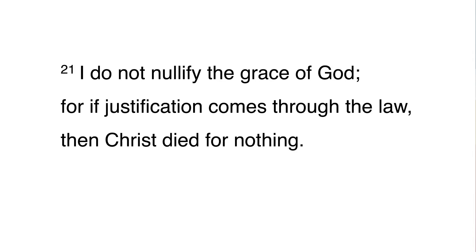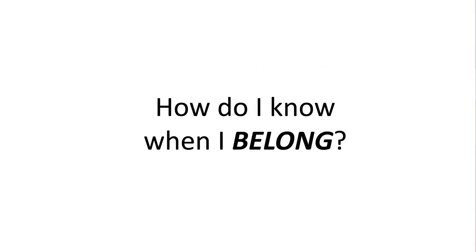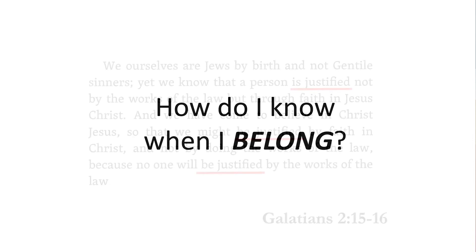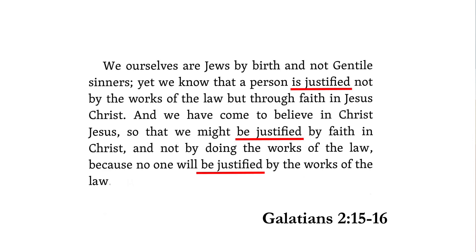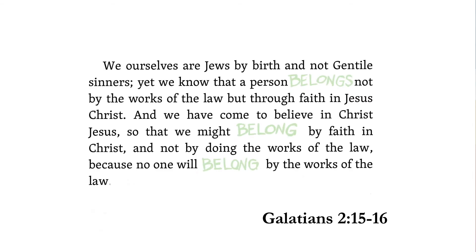This concludes the actual text study. I have one more thing I'd like to share. As I've gone through this, here's how I've put this into a 'what about now, why does it matter?' framework. If we read the passage again — 'we know that a person is justified' — what if we understood 'justified' as 'belonging'? 'We know that a person belongs to God, not by the works of the law, but through faith in Jesus Christ, and we have come to believe in Christ Jesus so that we might belong by faith in Christ and not by doing the works of the law, because no one will belong by the works of the law.' There are two ways to think about this — you may have heard of the difference between a bounded set and a centered set. A bounded set is when you create an in-group and out-group based upon people who are exactly the same.